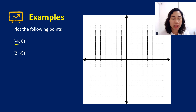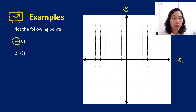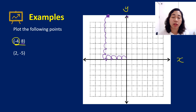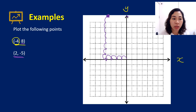Now let's plot the following points. For (-4, 8): always look at the first number and locate it on the x-axis. Negative 4 means you go 4 units to the left from the origin — one, two, three, four. Then since you have 8, you go up 8 units.